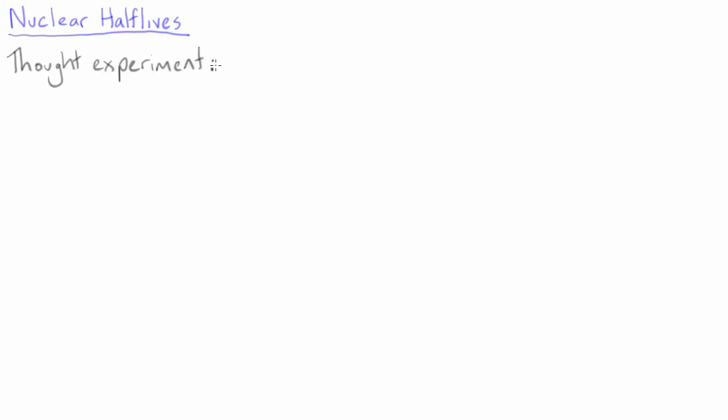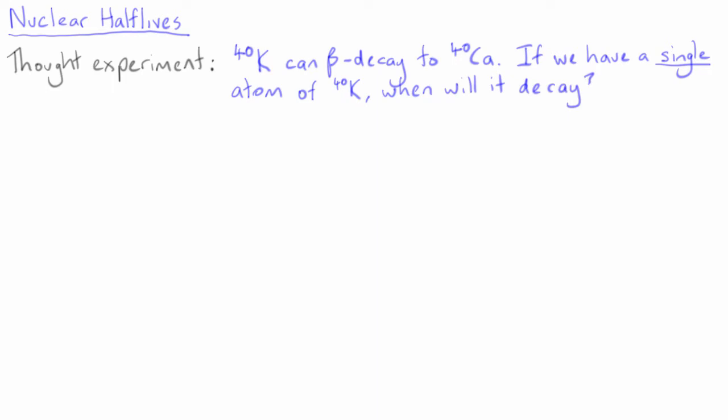Let's do a thought experiment. I mentioned in the last lecture that the mass of a calcium-40 nucleus was less than that of potassium-40, and I described how potassium-40 can beta decay into calcium-40. So we said that this process can happen, but here is the interesting question: when will it happen? To be more precise, if we have a single atom of potassium-40, can we say exactly when it will decay to calcium-40?